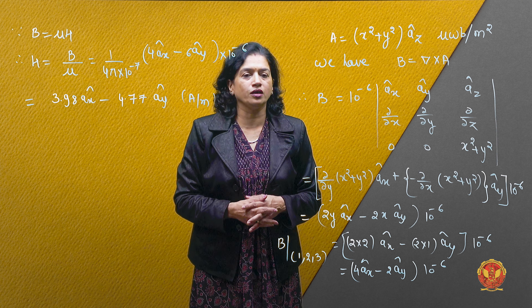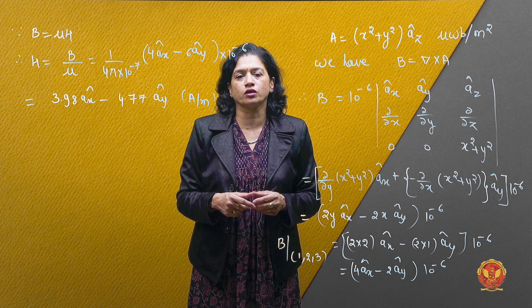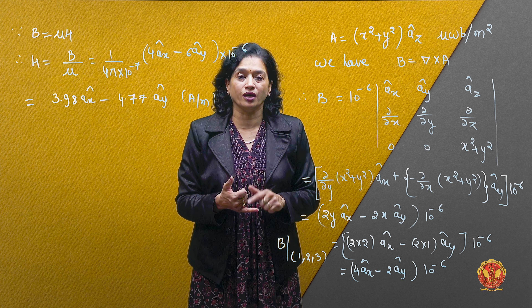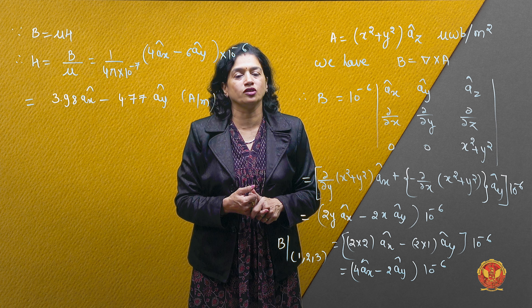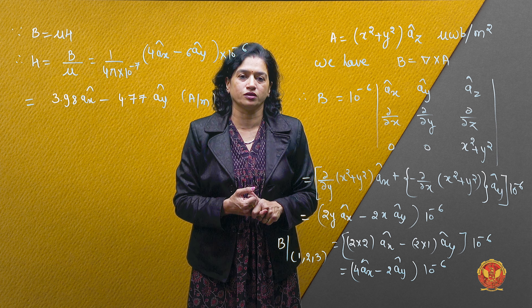Is tarah se hum vector magnetic potential ka use karte huay B, H, yeh sari chizein find kar sakte hain.